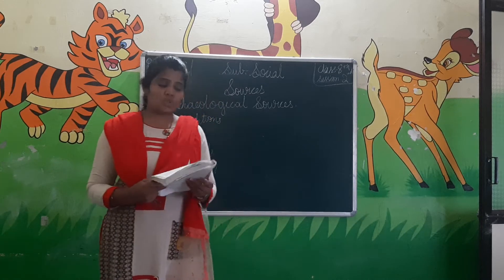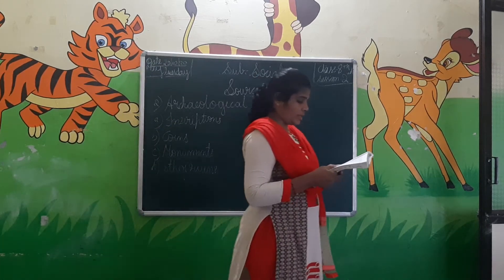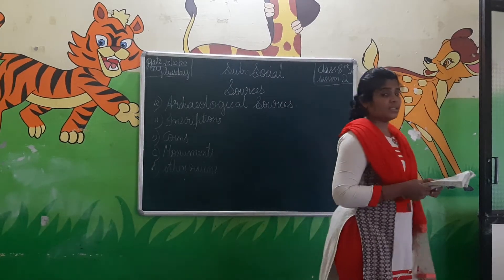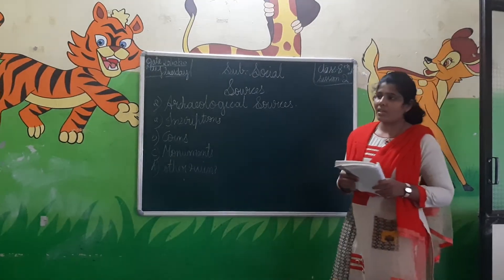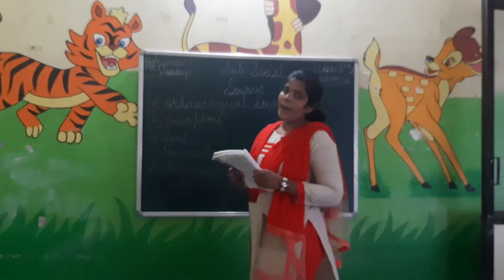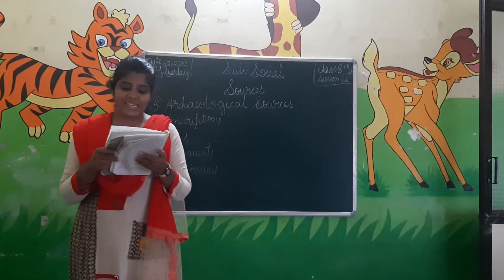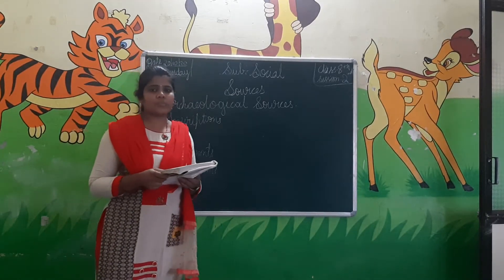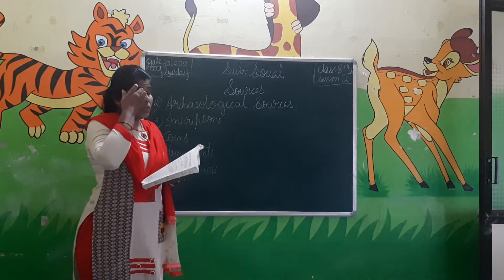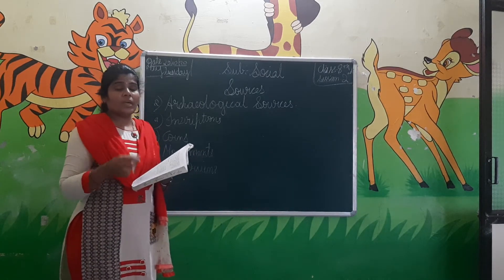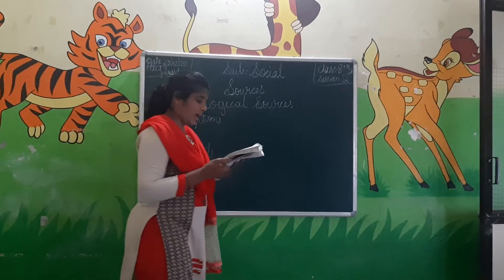Coins from those times are also found — what type of coins did they use? Terracotta pieces are pieces of baked clay. Bangles from that time were not only made of glass but also of mud and metals. Seals are also found — similar to the official seals we use in schools and offices today; some such seals were also present in those times.